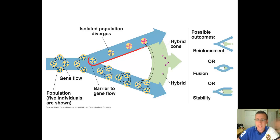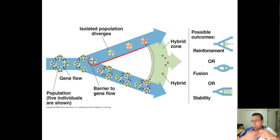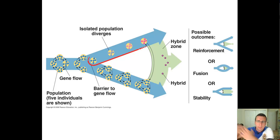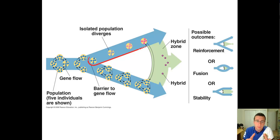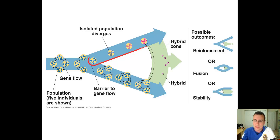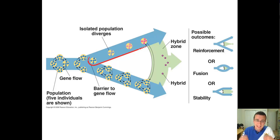Then maybe genetic drift will happen on top but not on the bottom. Maybe natural selection will be different on the top and on the bottom, and the environmental conditions will be different. Maybe mutations happen on the top but did not happen on the bottom. But over long periods of time and many, many generations, these changes that only happen in one but not the other will cause the populations to change so much that if later on the barrier is removed and the populations are again allowed to interchange genes...